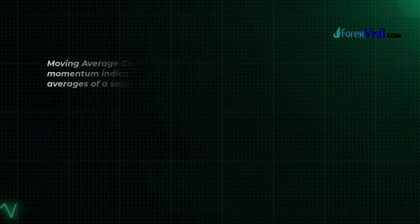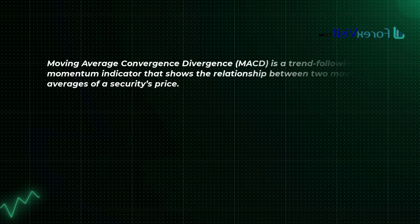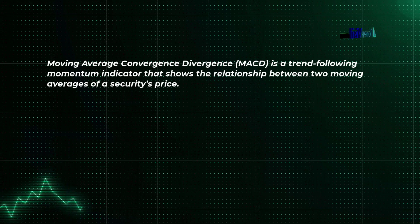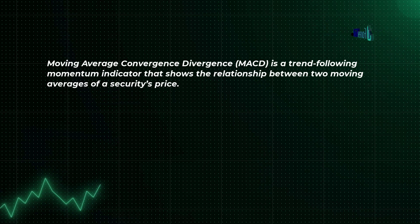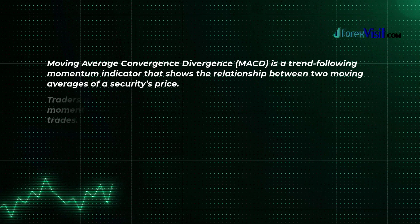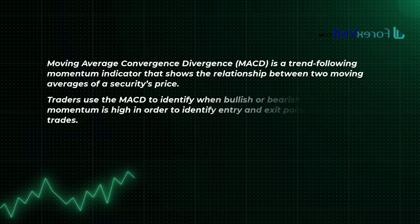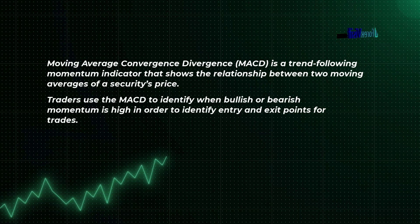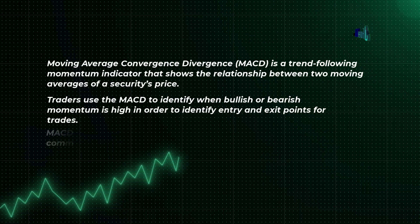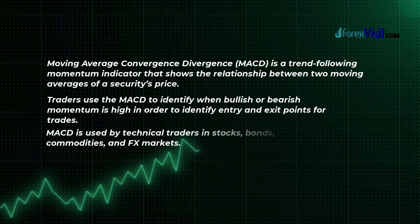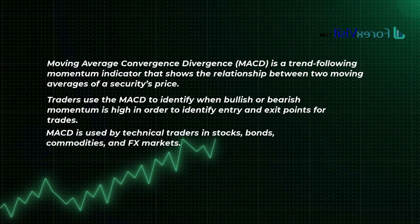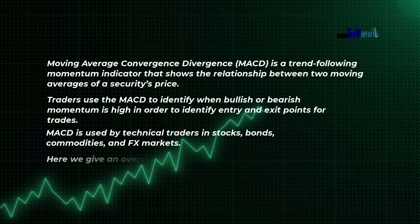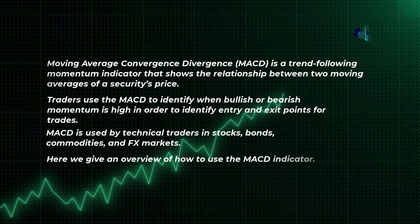MACD is a trend-following momentum indicator that shows the relationship between two moving averages of a security's price. Traders use the MACD to identify when bullish or bearish momentum is high, in order to identify entry and exit points for trades. MACD is used by technical traders in stocks, bonds, commodities, and FX markets. Here we give an overview of how to use the MACD indicator.